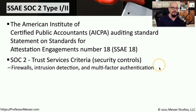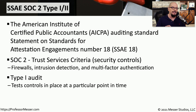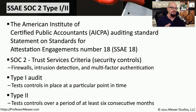When performing these audits, you may receive a Type 1 audit or a Type 2 audit. A Type 1 audit examines the controls in place at a particular date and time. If you need a broader perspective of security controls, then you may undergo a Type 2 audit, which tests the controls over a period of at least six consecutive months. These audits cover a large number of security controls and tend to be seen in very large organizations, since smaller organizations don't tend to have the same scope with their security controls.